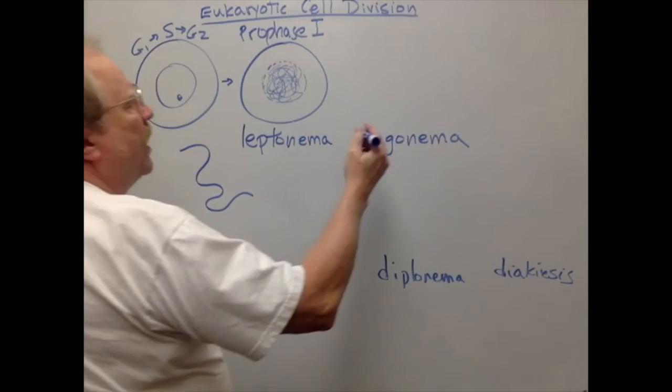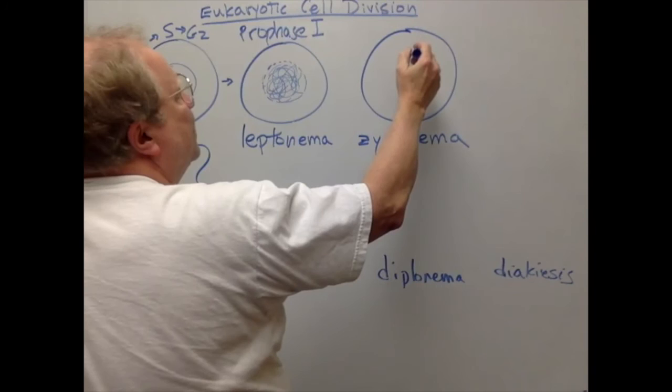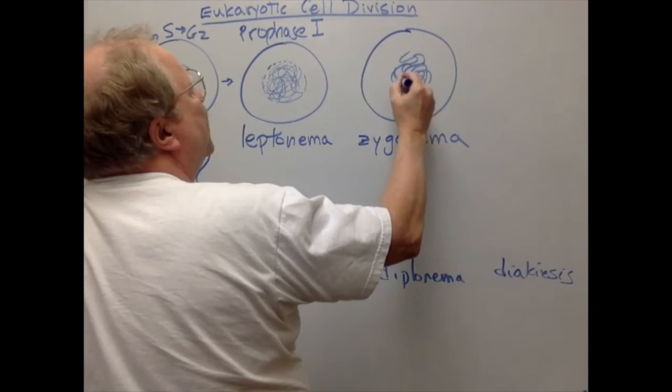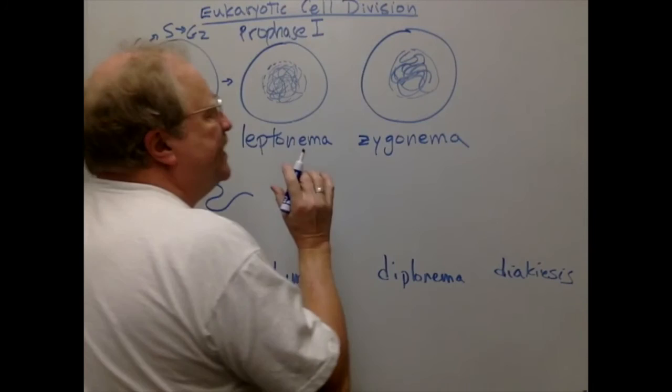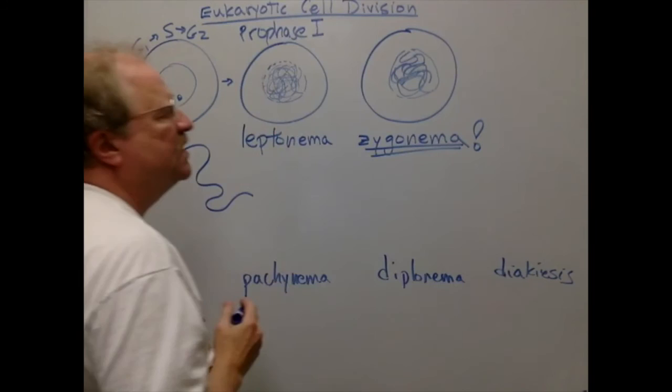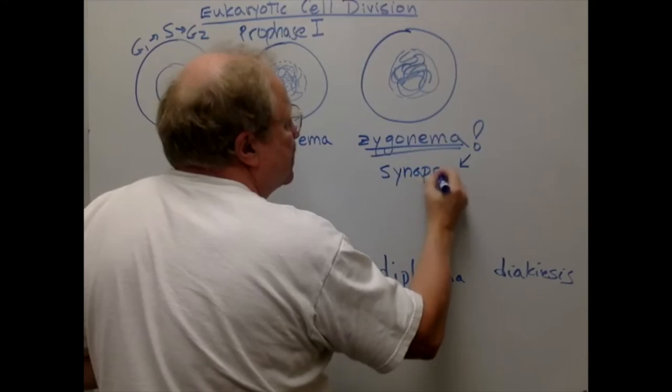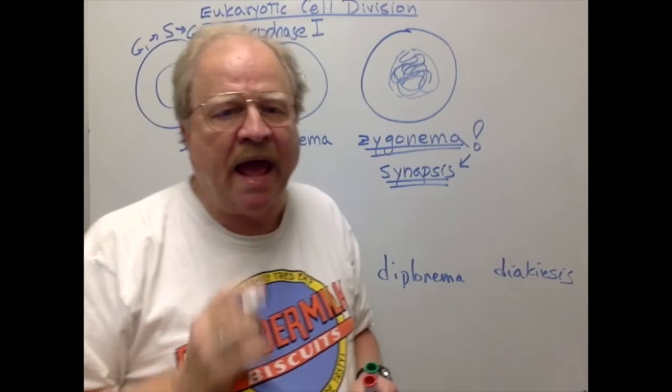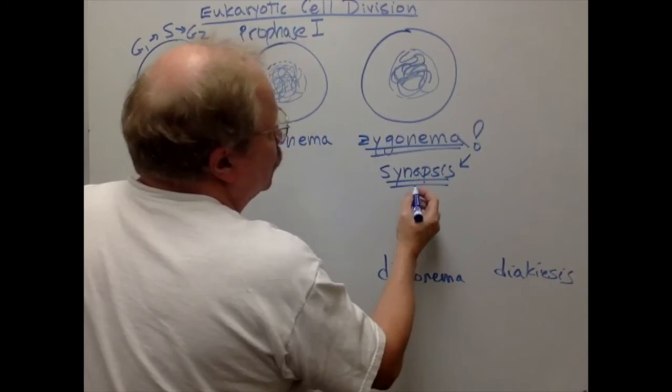During zygonema, the chromosomes continue to condense, getting shorter and fatter, and the nuclear membrane is probably still there. The very unique event during zygonema is the process of synapsis — the pairing of homologous chromosomes. With a light microscope you really can't watch this process happen, but what's occurring is the homologous chromosomes are coming together and pairing.